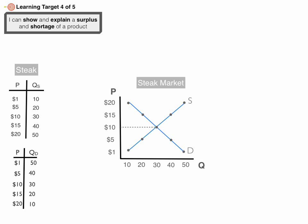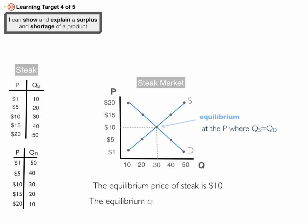You can see they cross. At the point they cross, that is equilibrium. Market equilibrium is the price where quantity supplied equals quantity demanded. At $10, quantity supplied is 30 and quantity demanded is 30. So the equilibrium price of steak in this example is $10, and the equilibrium quantity is 30.